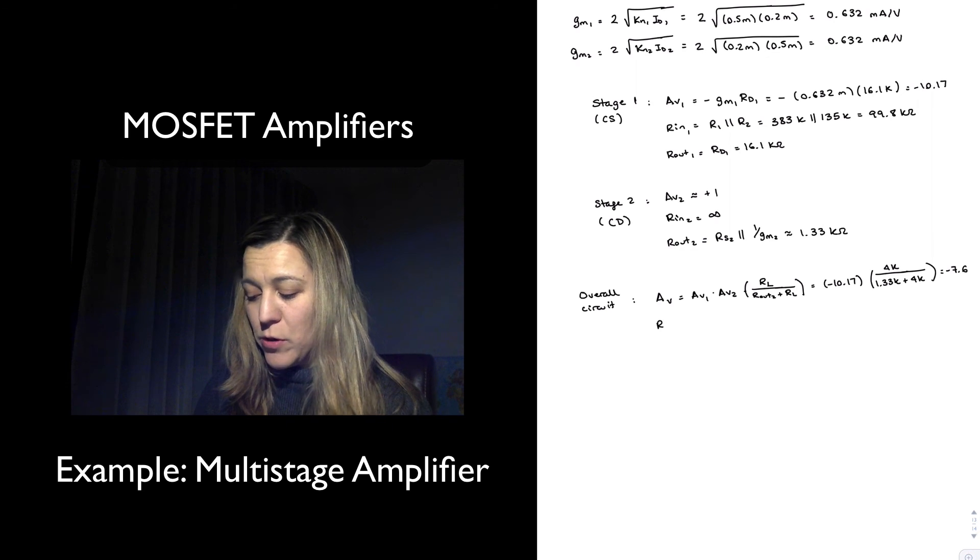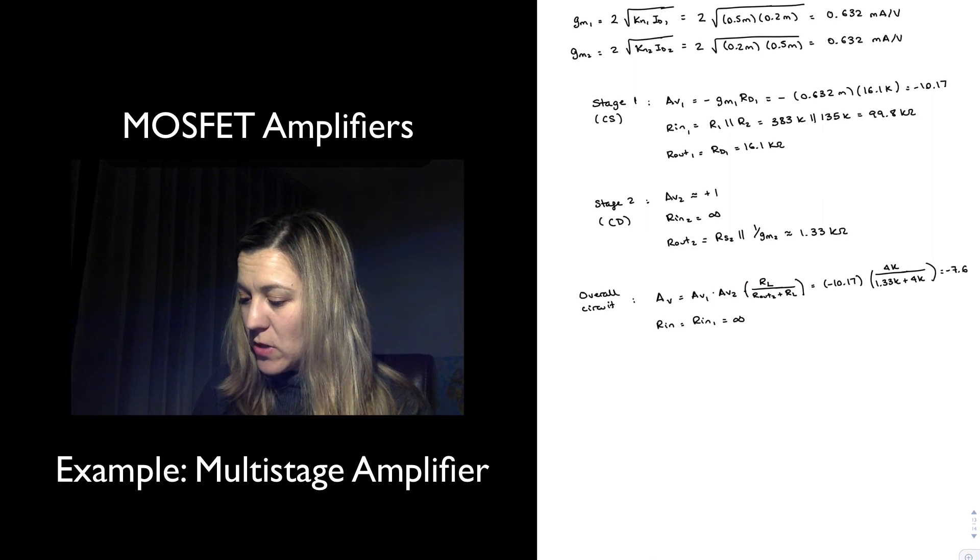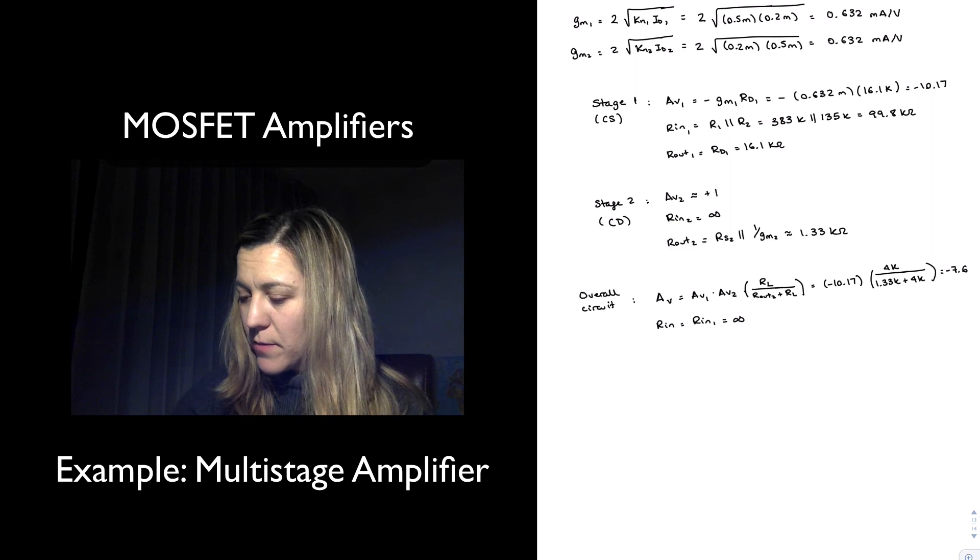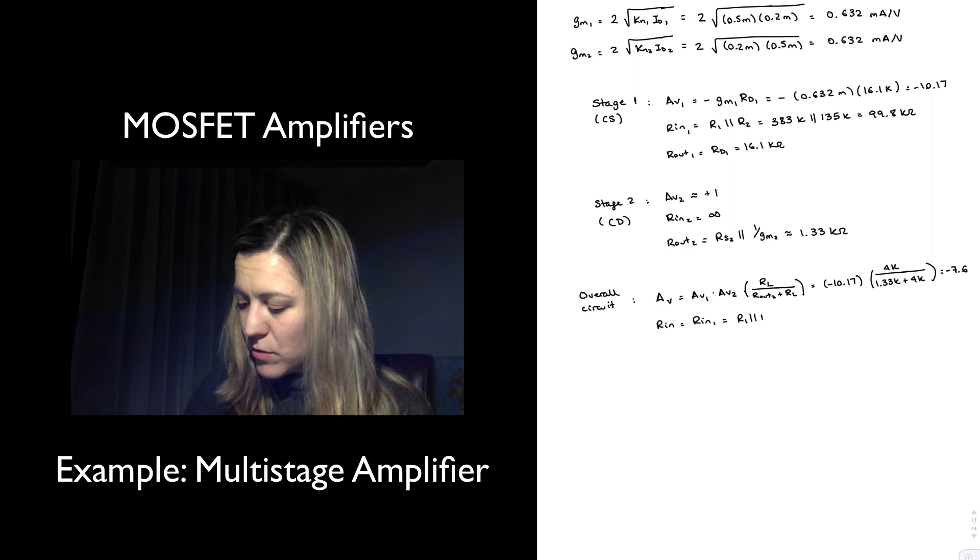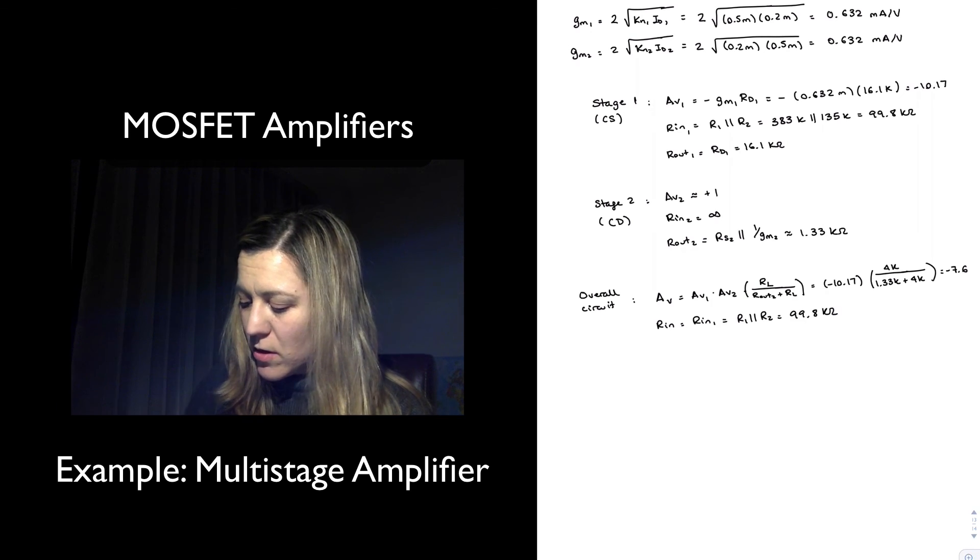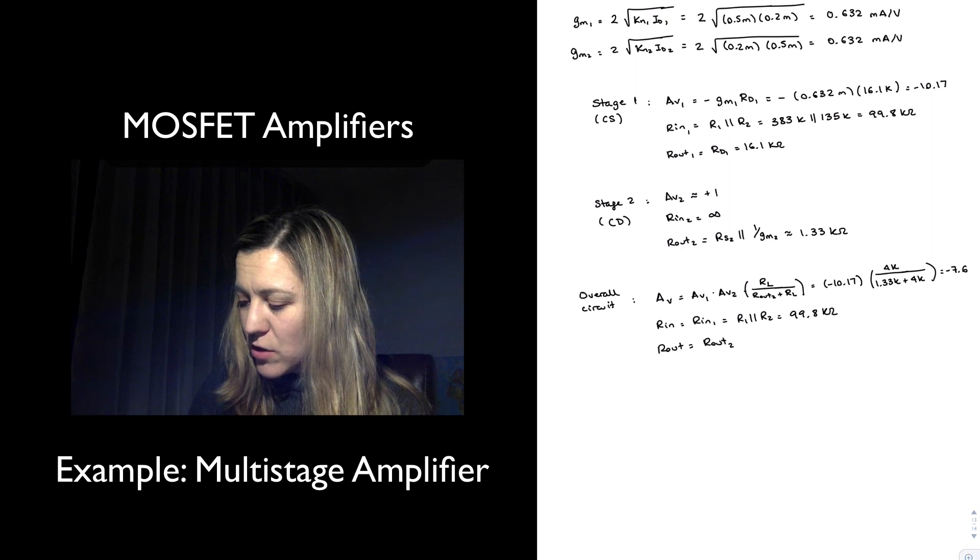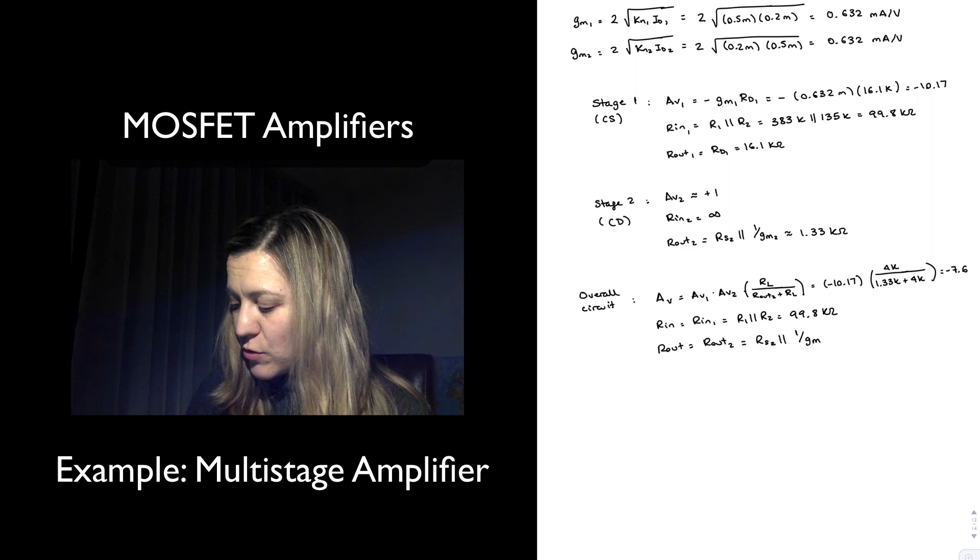My overall input resistance is going to be equal to the input resistance of the first stage, which is around 100k ohms. My output resistance is going to be equal to Rout2, which we calculated to be around 1.33k ohms.